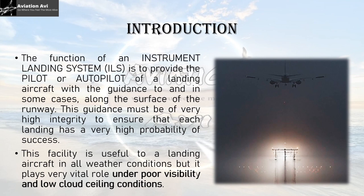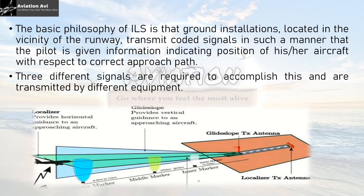Introduction: The function of an Instrument Landing System is to provide the pilot or autopilot of a landing aircraft with guidance to, and in some cases along, the surface of the runway. This guidance must be of very high integrity to ensure that each landing has a very high probability of success. This facility is useful in all weather conditions but plays a vital role under poor visibility and low cloud ceiling conditions.